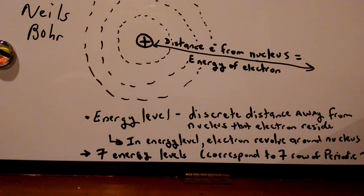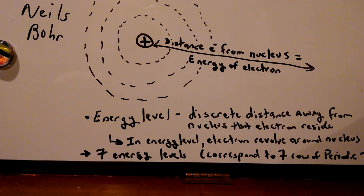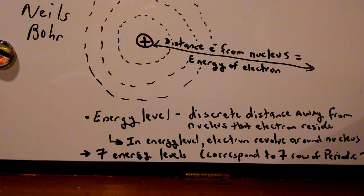So that is correct, except for the fact that while there are energy levels — yes — the electrons, when they are in the energy levels at discrete distances away from the nucleus, they don't revolve around the nucleus like planets around the sun. They actually do something else, which we'll talk about later on.